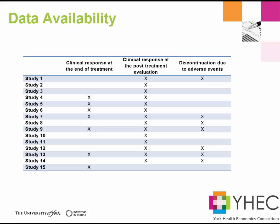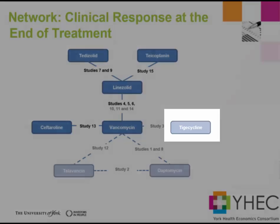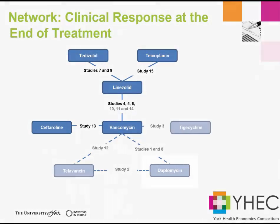Going back to the example of interventions for ABSSSI caused by MRSA, this table illustrates which studies reported usable data for each of the three outcomes of interest — all binary outcomes. Clinical response at the end of treatment was reported by seven of the studies. Looking at the resulting network, we lose three treatments completely — tigecycline, telavancin, and daptomycin — because none of the trials assessing these treatments reported usable data. Although three studies assessing linezolid and vancomycin dropped out, three studies still reported that comparison, so the link remains intact. Based on this network, we get estimates for each of the remaining five treatments versus every other treatment.